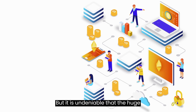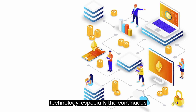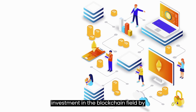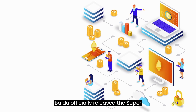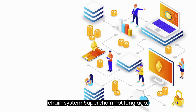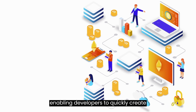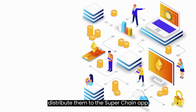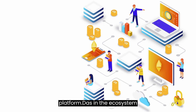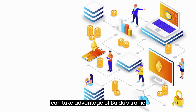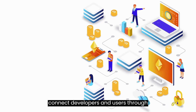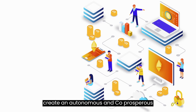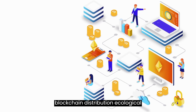But it is undeniable that the huge imagination brought by blockchain technology, especially the continuous investment in the blockchain field by companies such as Baidu, is laying the foundation for the prosperity of the entire ecology. To promote the development of blockchain ecology, Baidu officially released the Superchain system, enabling developers to quickly create and publish their own DApps and distribute them through the Superchain developer platform. DApps in the ecosystem can take advantage of Baidu's traffic advantages, accurately connect developers and users through content and service recommendations, and create an autonomous and co-prosperous blockchain distribution ecological service.